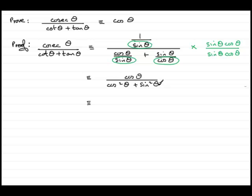Cos squared theta plus sine squared theta is always one. So what we've got here is just simply cos theta over one. And what's cos theta over one? Well, cos theta. And that's what we had to prove.